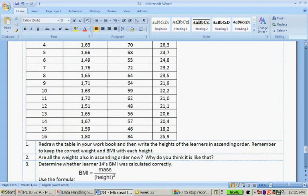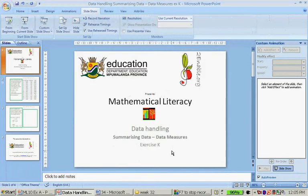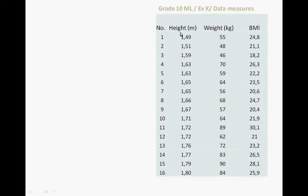Redraw the table in your workbook and then write the heights of the learners in ascending order. Remember to keep the correct weight and BMI with each height. So it's ordered now. Height is 1.49, 55, and the BMI is 24.8.